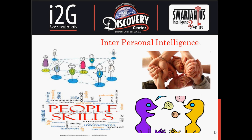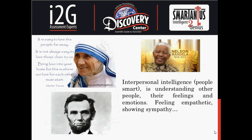Interpersonal Intelligence, or People Smart Intelligence, is the potential for working with others — understanding, leading, and organizing by effectively communicating, resolving conflicts, and selling. This includes a whole range of social skills needed for effective person-to-person communication and relationship building.